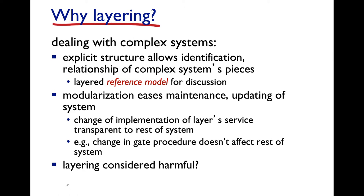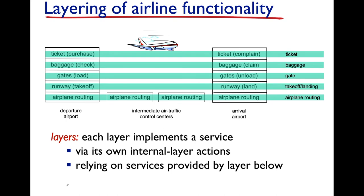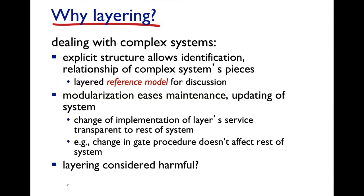Why do layering at all? This is a software engineering construct, and the explicit structure allows you to identify relationships among the pieces in this complex system we call the modern Internet. When you have modularization afforded by these layers, it makes it easier to maintain and update your system. For example, you could completely change what happens inside the gate load function without modifying the airplane process — ticketing, baggage, gate load, runway, and so forth. You can swap in, swap out, or change implementation of one function without modifying the entire system. It's transparent to the rest of the system.